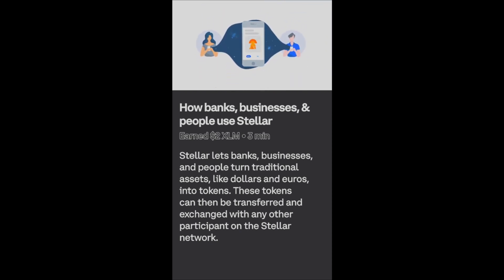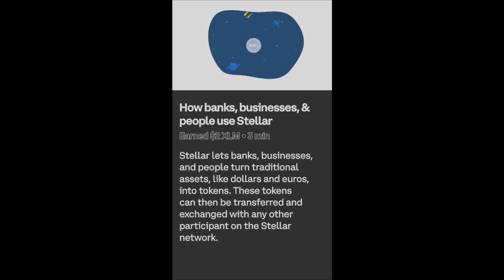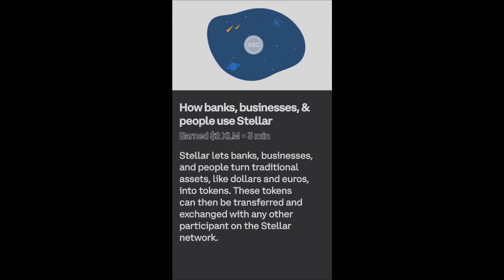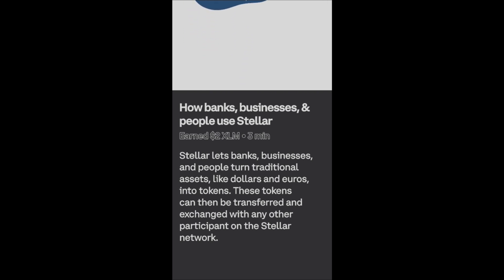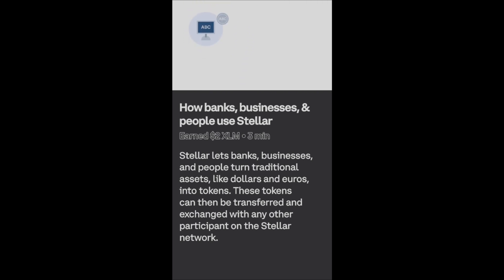Next up: the business. Let's call it ABC Technologies. ABC makes an app and they want to make it possible for the app's users to buy and sell in-game items with each other using a single currency. To do that, they use Stellar to create a new token called the ABC token. The ABC token is in effect a new cryptocurrency running on Stellar — it isn't backed by a real-world dollar like Main Street Bank's token, but other than that it acts entirely the same.